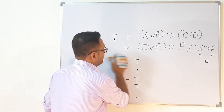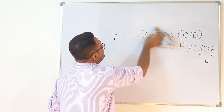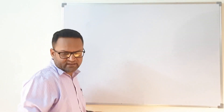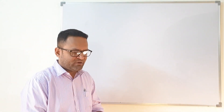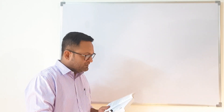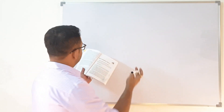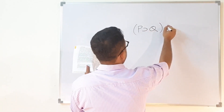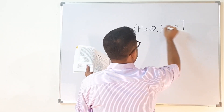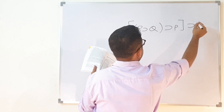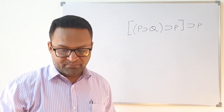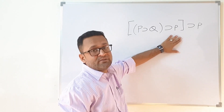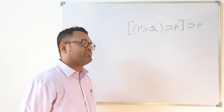This technique is not only applicable to arguments — it also applies to individual statements. For example, let us consider Pierce's Law, which is given in your book. Pierce's Law states: ((p → q) → p) → p. We need to check whether this is a tautology, a contradiction, or a contingent proposition.